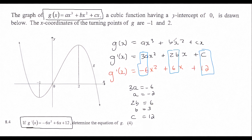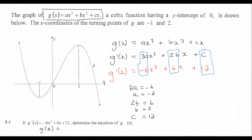Now we have the equation of g. Therefore, g of x equals minus 2x³ plus 3x² plus 12x.